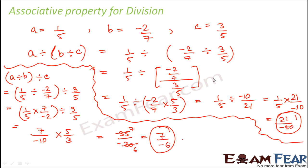So we have now looked at three properties — closure property, commutative property, and associative property — and we saw that some hold true for addition, some for subtraction, some for multiplication, and some for division.